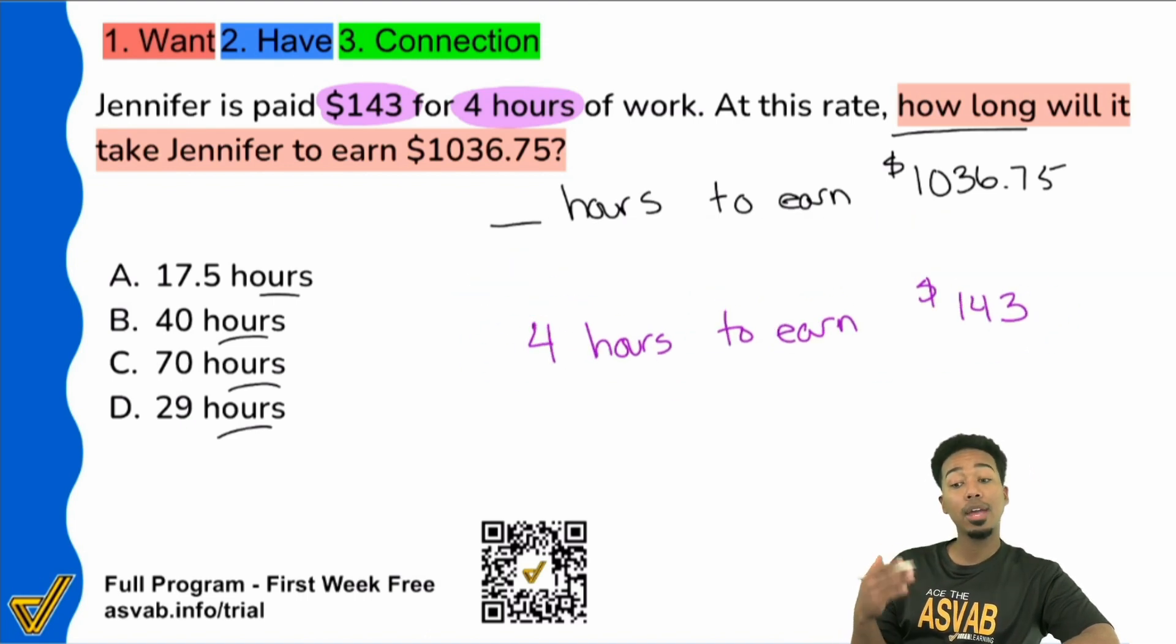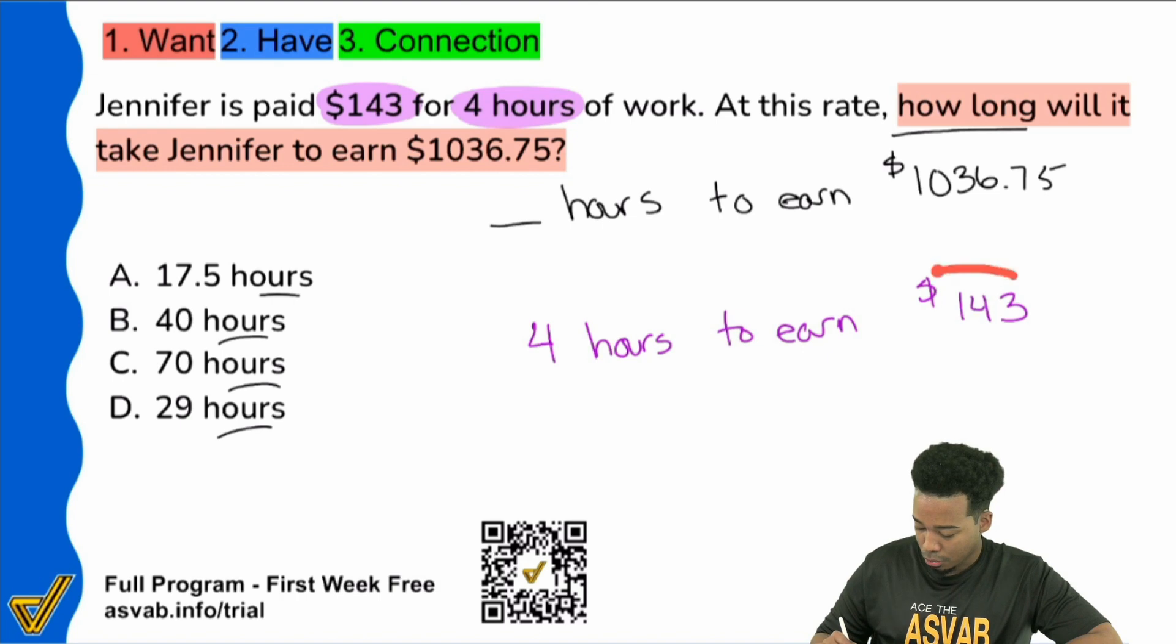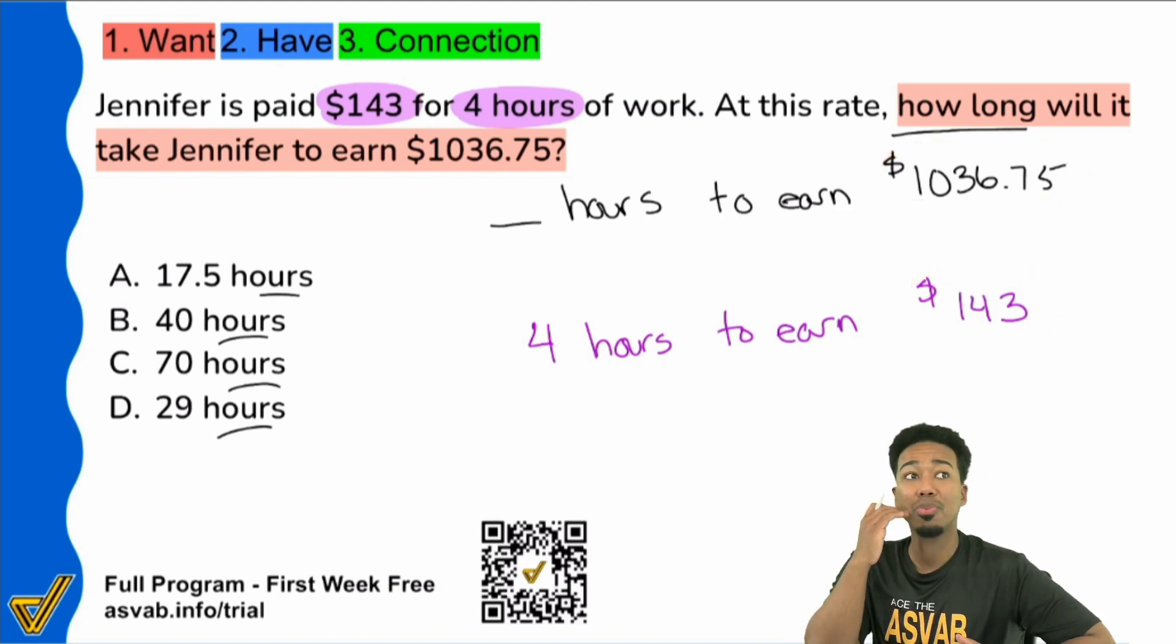Let me go ahead and show you again how proportions work. Proportions are all about comparing the same things in the same way. So think of it like this. If I'm going from 143 to 1,036, well, proportions are comparative.